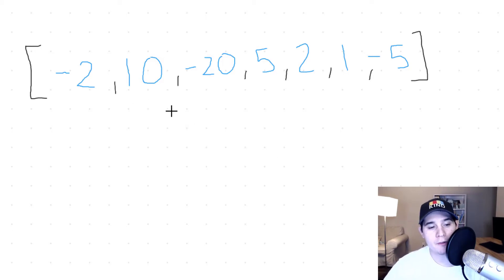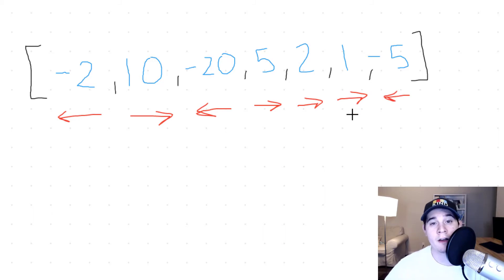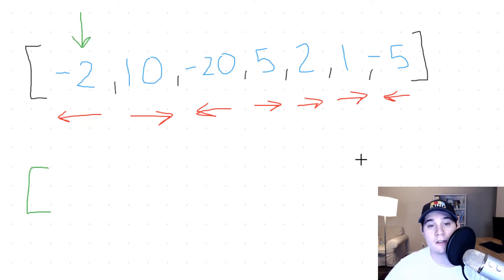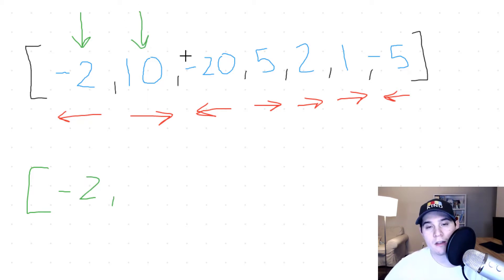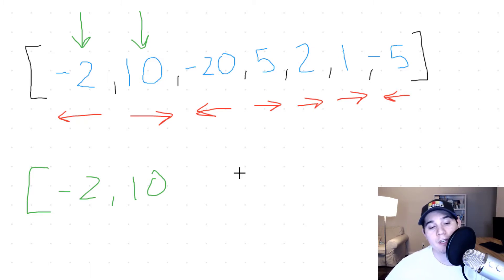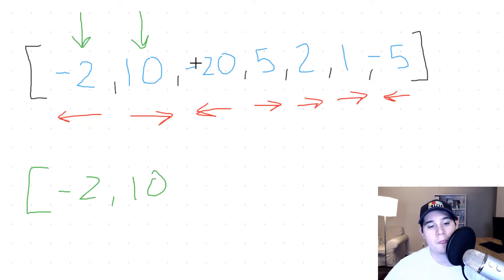Let's write out the directions for all numbers in this example and initialize our stack. We'll have a stack and a pointer starting at index zero. Since our stack is currently empty, we can just add negative two inside the stack, then iterate forward. Any time we encounter a positive number, we can immediately add it to the stack — so we add 10. The reason we can immediately add positive numbers is because we haven't reached a point where a negative number is directly to the right of a positive number.